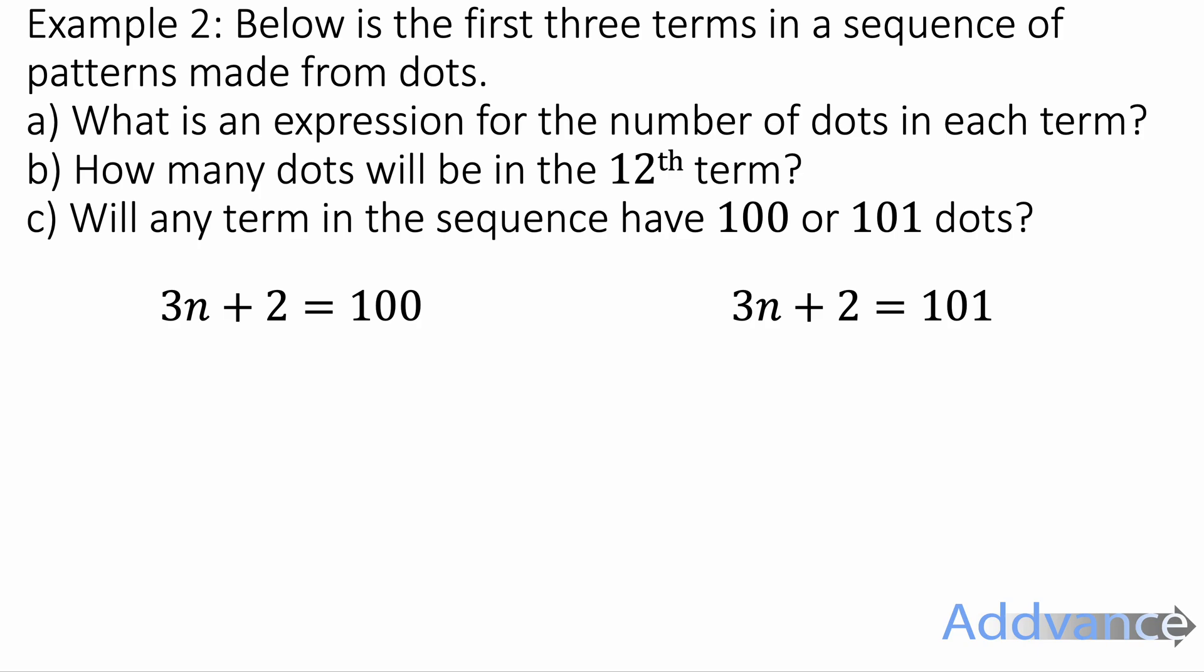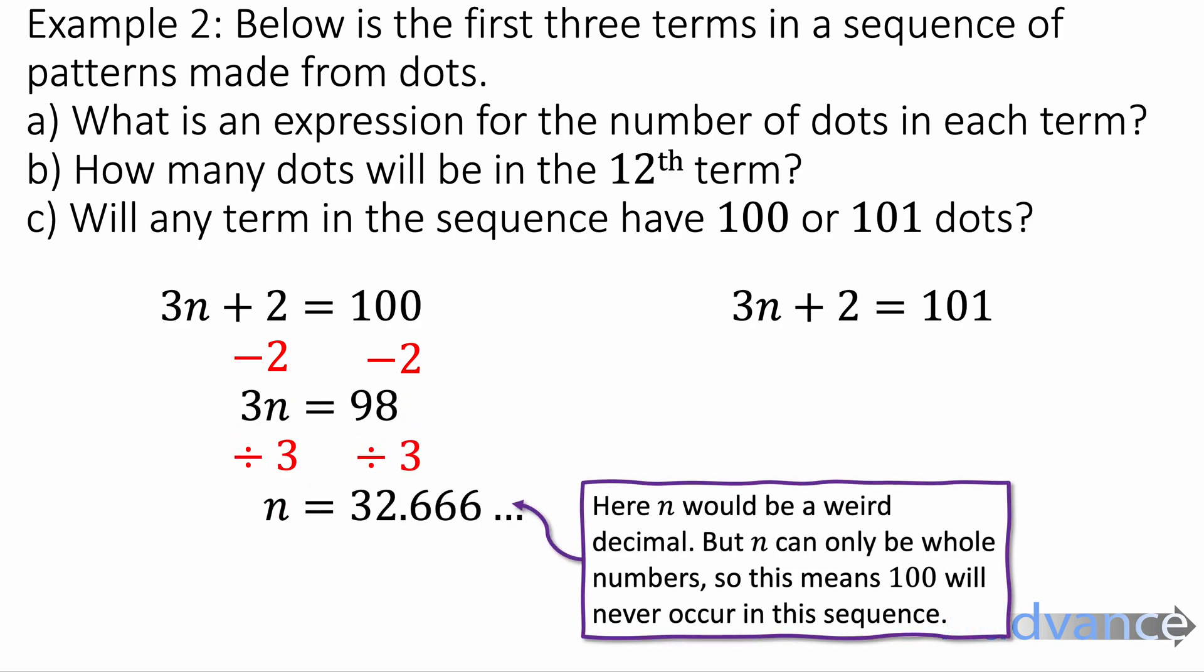Now we want to find if 100 or 101 occur in this sequence. So we're going to make 100 and 101 equal to the nth term. So 3n plus 2 equals 100, or 3n plus 2 equals 101. I'm going to solve this equation. We'll start by taking two off both sides. I'll get 3n equals 98. Then we'll divide by 3. I'll get n equals 32.666. Now that is a weird decimal, and that's not a whole number. So you can't have an n that's not a whole number. So this means that 100 will never be in the sequence because n is not a whole number.